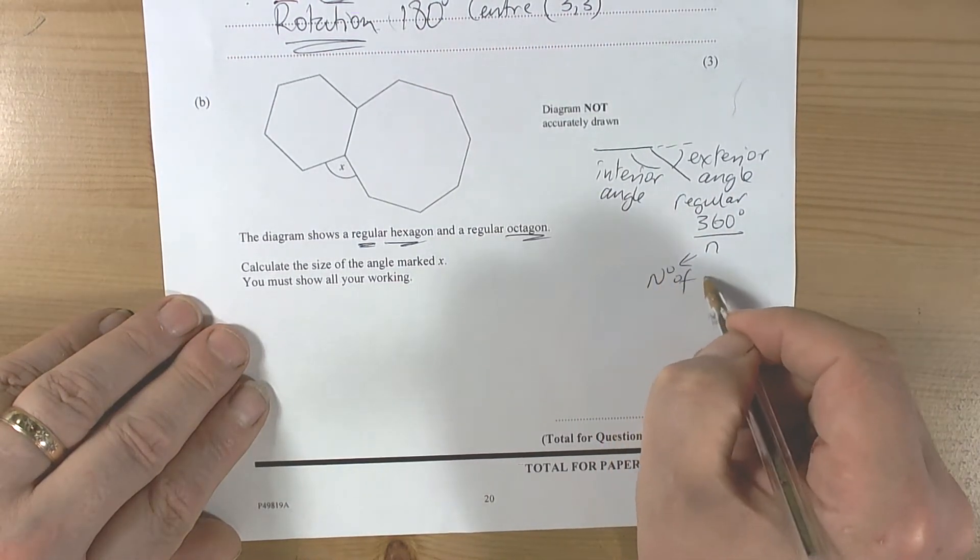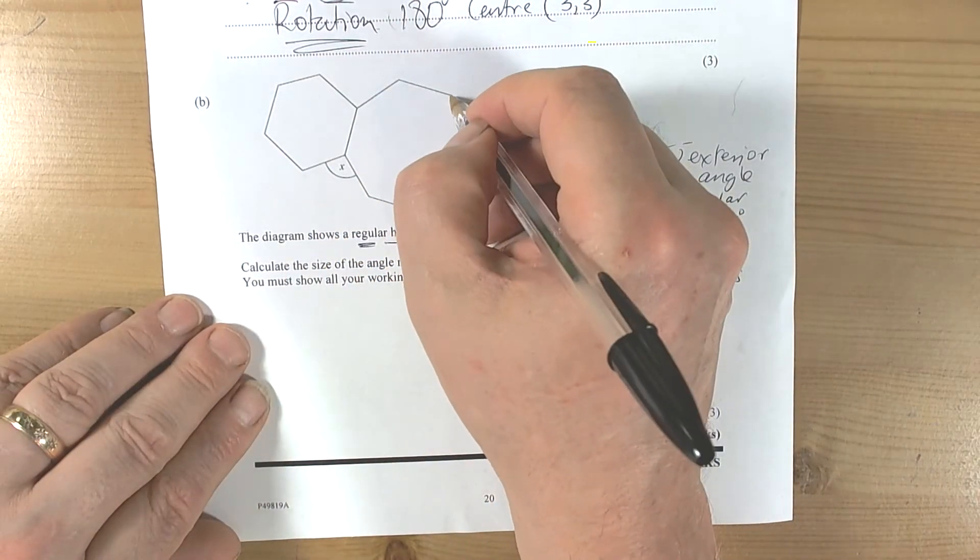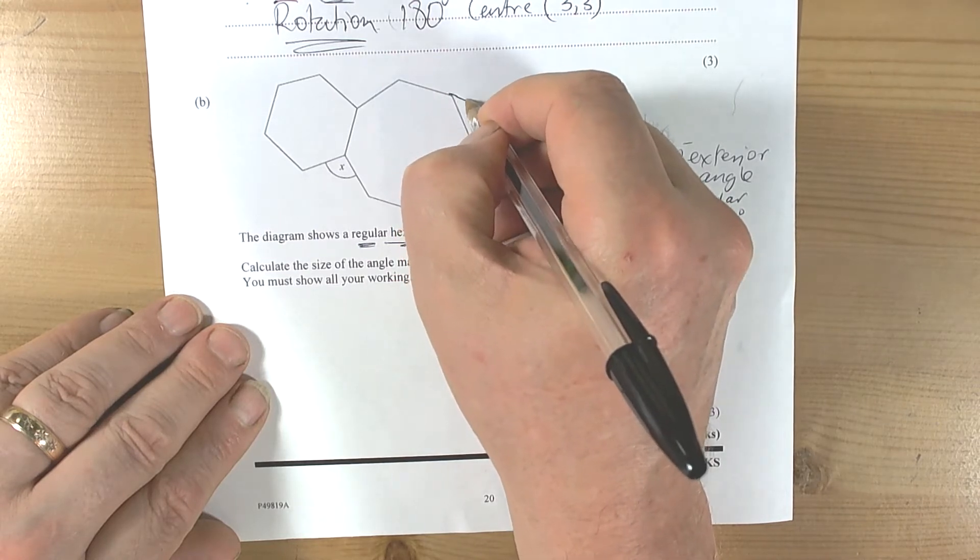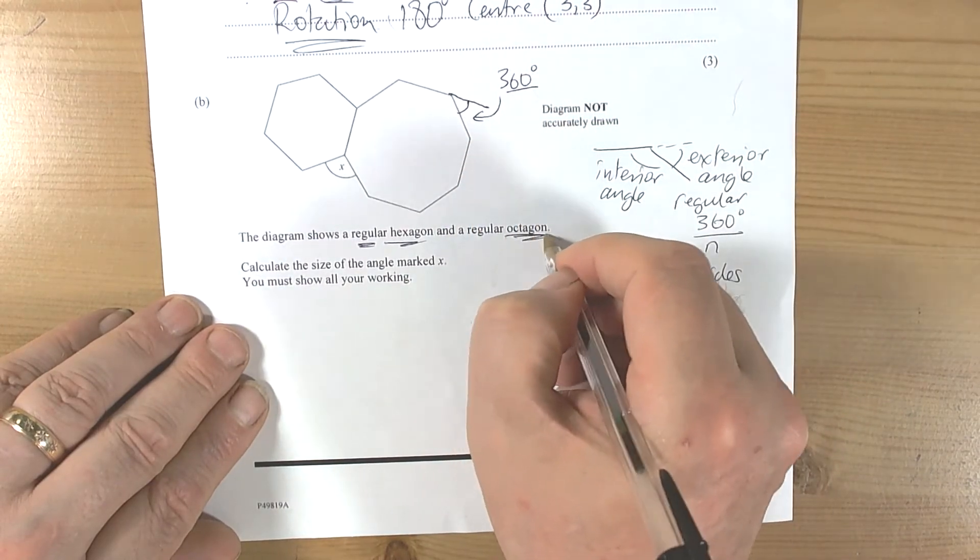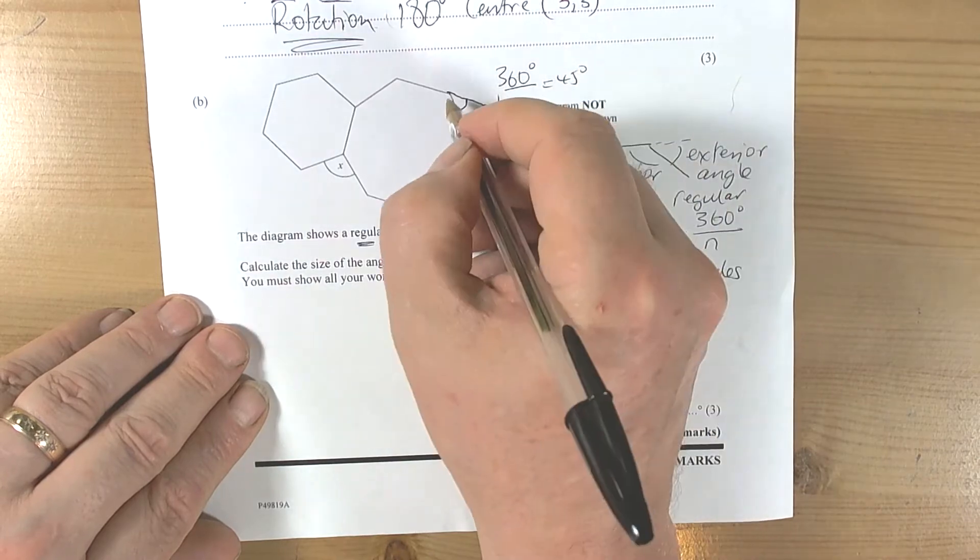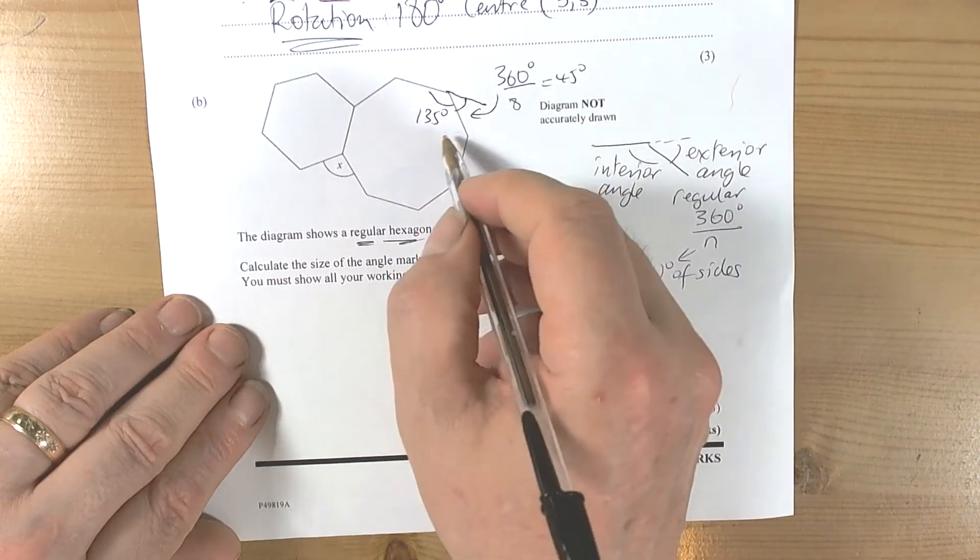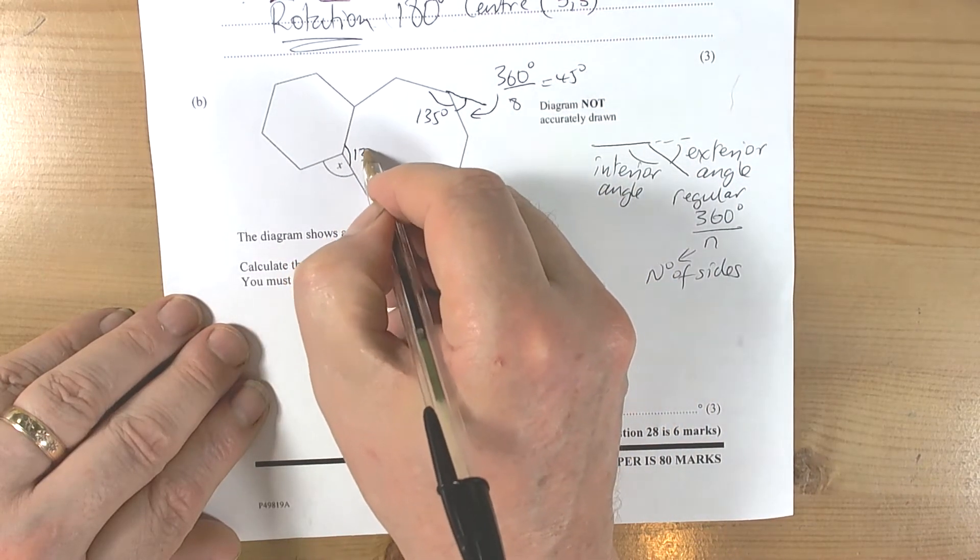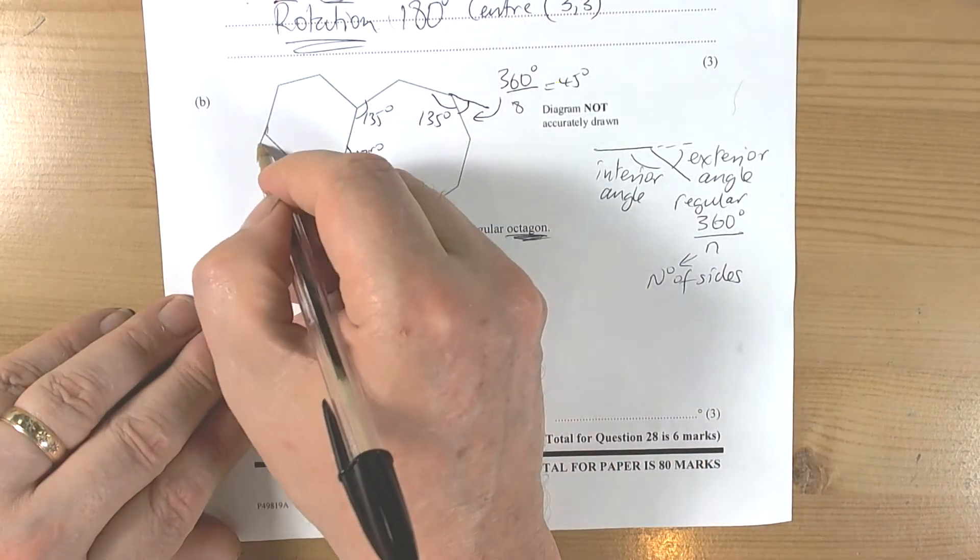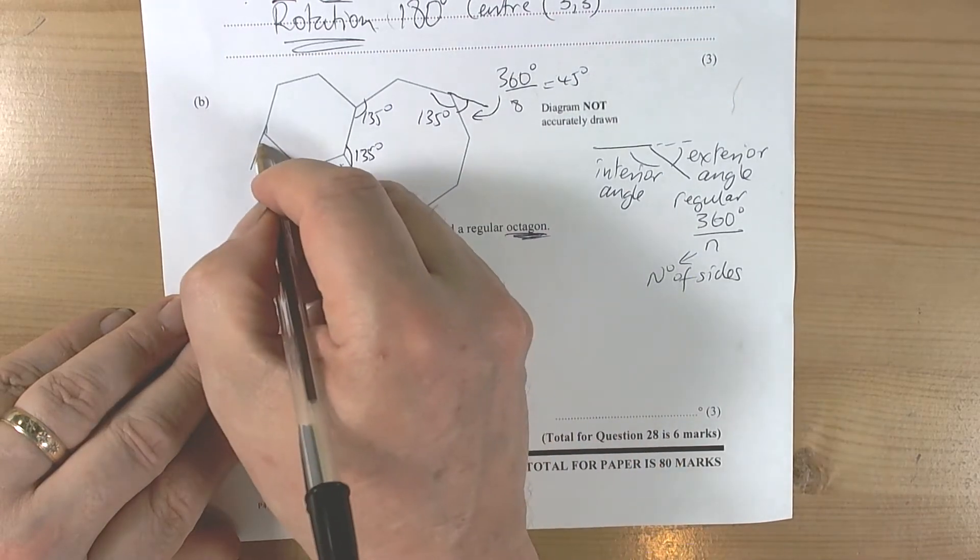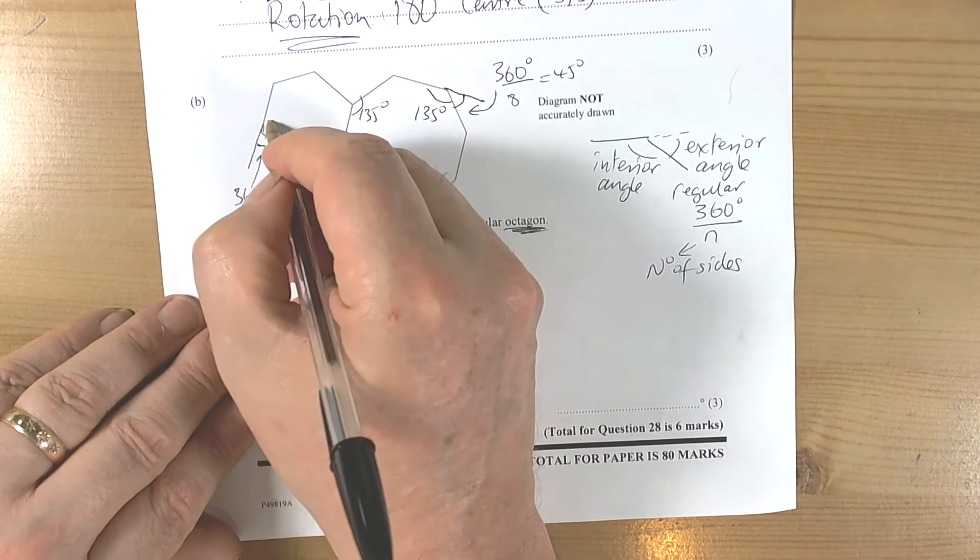For this question, it's important to work out the exterior angle. For the octagon, 360 degrees divided by 8 sides is 45 degrees, so the interior angle must be 135 degrees. For the hexagon with six sides, 360 divided by 6 is 60 degrees exterior, so 120 degrees interior. Because it's regular, all of these angles are the same.